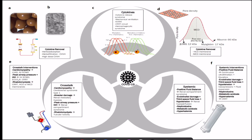To summarize, COVID-19 has three major problems. First, cytokine release syndrome, which can be augmented by mechanical ventilation, ECMO, CRRT circuits, and hemophagocytic syndrome. Second, organ crosstalk — including cardiorenal syndrome, lung-kidney crosstalk, high peak pressures, and rhabdomyolysis. Third, systemic issues including positive fluid balance, endothelial damage, third-space loss, hypertension, nephrotoxic agents, metabolic acidosis, and hyperkalemia.